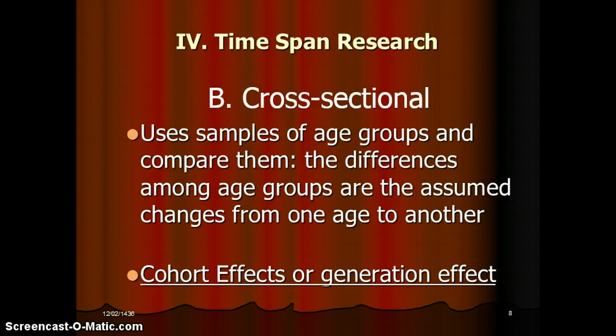Cross-sectional research uses samples of different age groups and compares them. The differences among age groups are assumed to represent changes from one age to another. Remember: cross-sectional — it's across the board, comparing different age groups at one point in time.